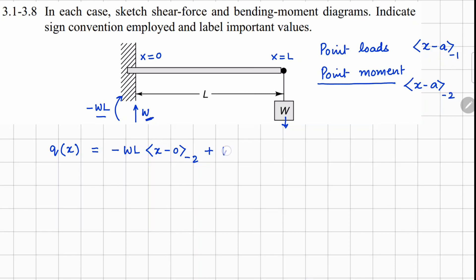Then your W force going up, so plus W(x minus 0) - for point load we use minus 1. And for this one right here, it's a W acting downwards, (x minus L) to the minus 1.